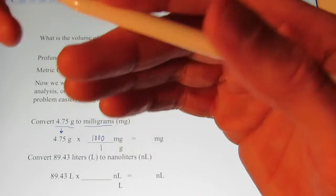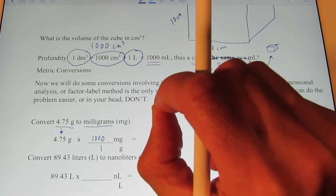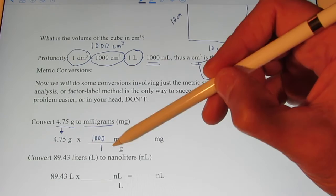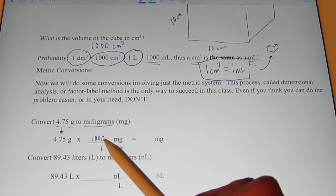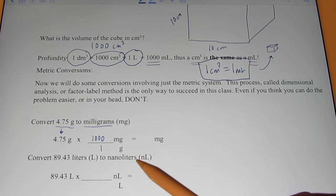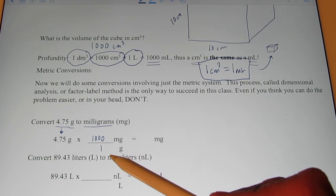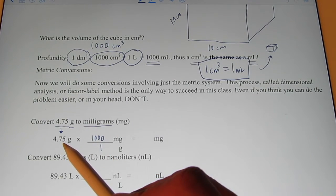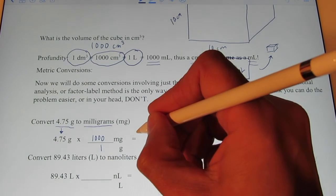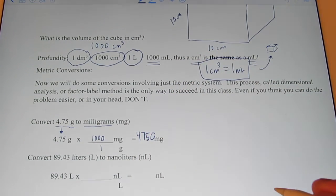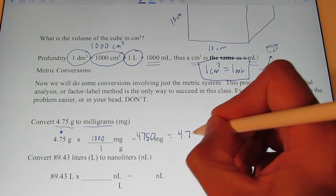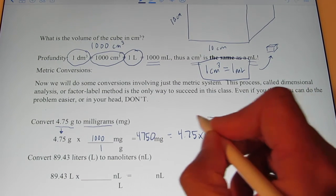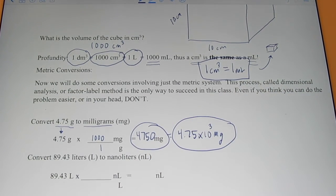Now, since the number one thousand is on the top of my conversion factor, I will multiply by it. If we ever end up with a number other than one on the bottom, we would divide by it. So, we have 4.75 times a thousand, and that equals 4,750 milligrams. We could also write that in scientific form as 4.75 times ten to the third milligrams.